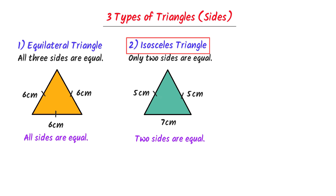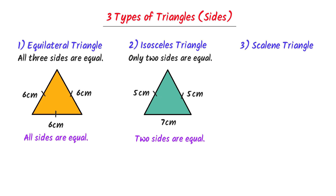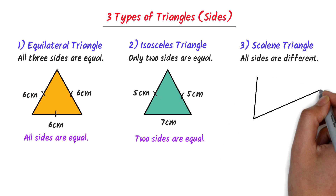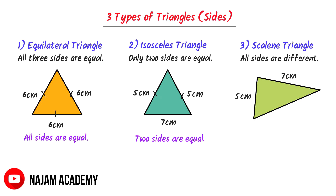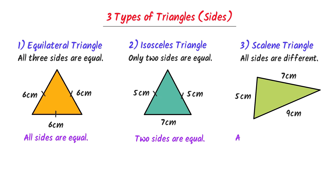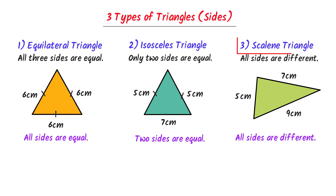The third type of triangle is the scalene triangle. In a scalene triangle, all three sides are different. For example, in this triangle, this side is 5cm, this side is 7cm, while this side is 9cm. All three sides are different, so it is a scalene triangle. These are the three types of triangles on the basis of sides.